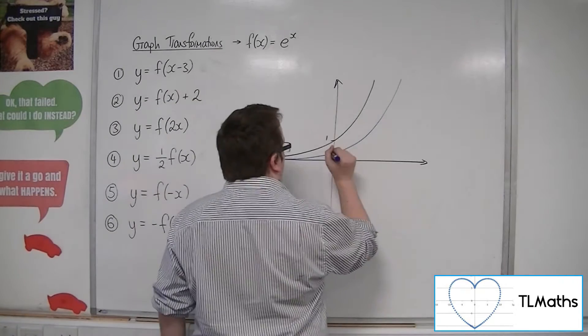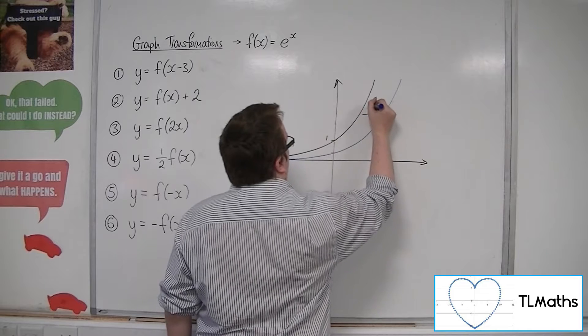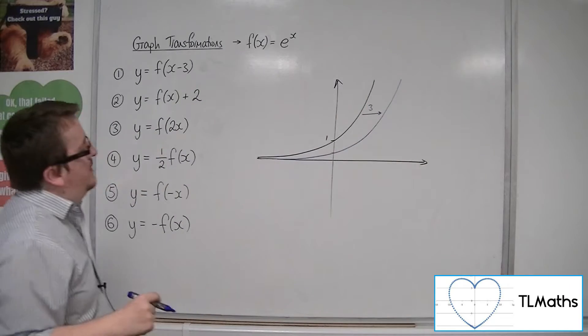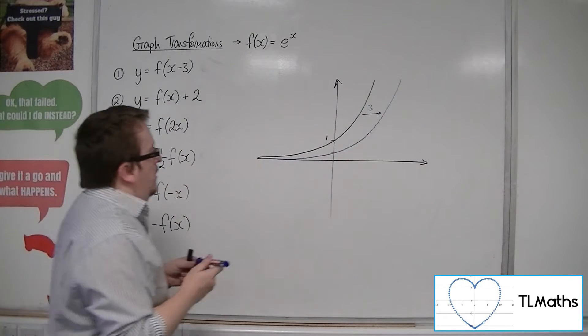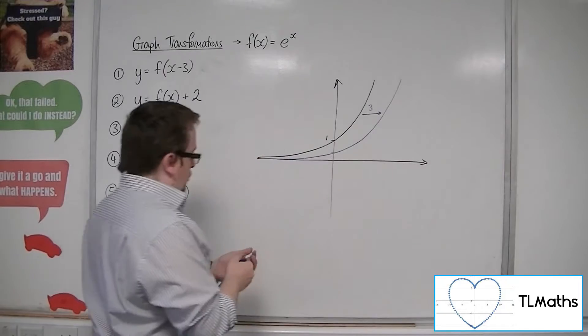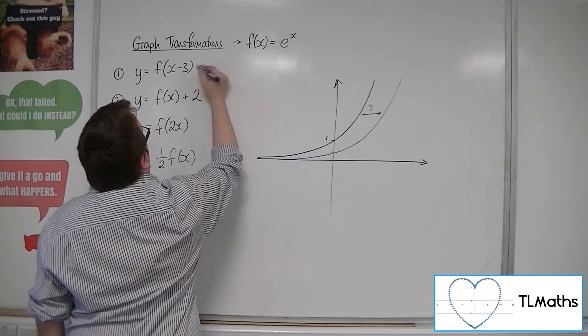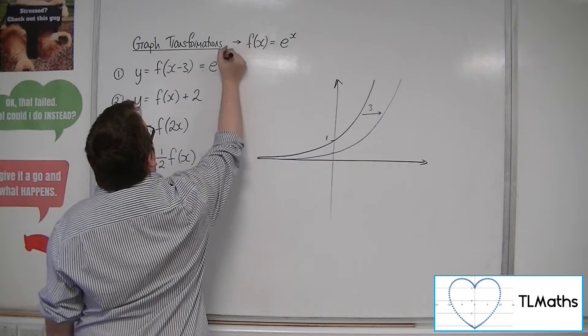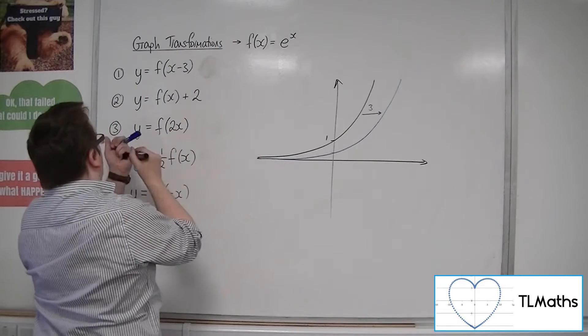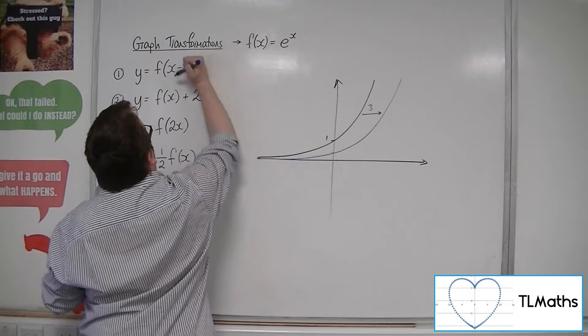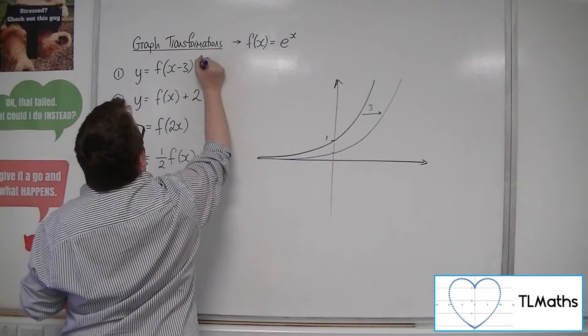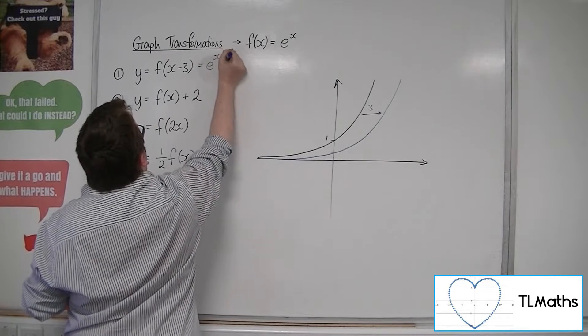Now, so that's moved 3 units to the right. Now, we could work out where it crosses the y-axis. So let's just write down what the equation would be first. So we're replacing the x with x minus 3. So e to the x minus 3, just so we know it's a transformation.